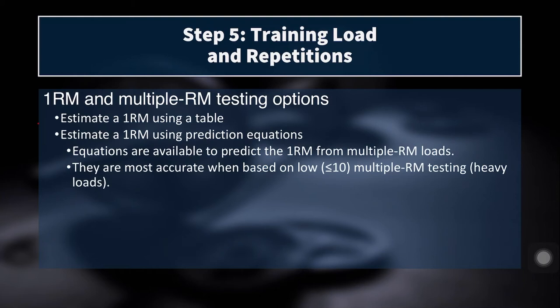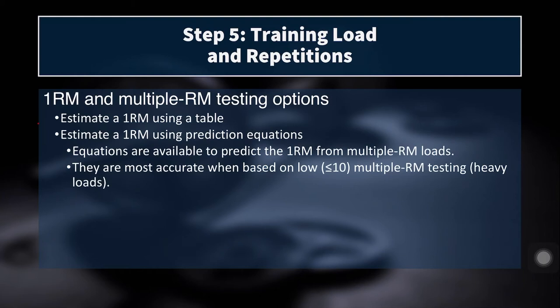So here are our options. We can use a 1RM testing table, or we can use a 1RM prediction equation where we predict the 1RM from multiple rep max loads. Remember that previous table showing percentages of 1RM you should be able to lift for a certain number of reps — a 1RM prediction table essentially does the opposite of that.